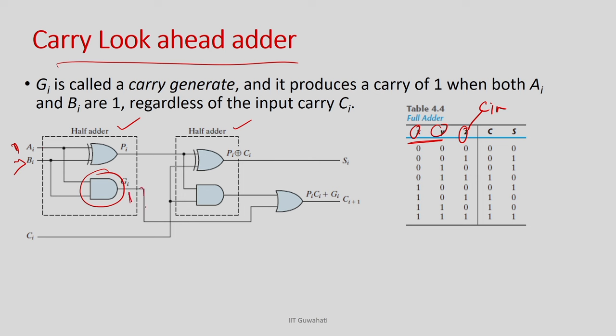Now for 4 full adders with inputs a_i, b_i (i=0..3), the propagate and generate signals P_i = a_i ⊕ b_i and G_i = a_i · b_i can all be computed independently in parallel — there is no carry dependency. If I can express the carries in terms of P_i and G_i, I do not need to depend on the previous block.